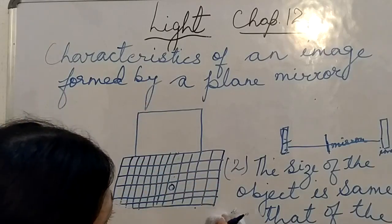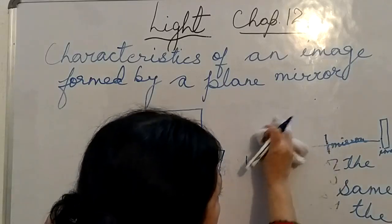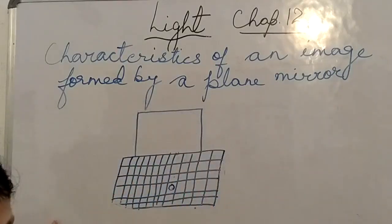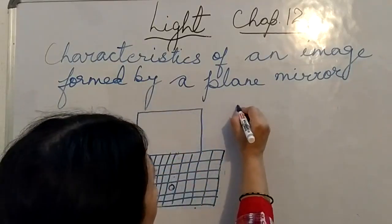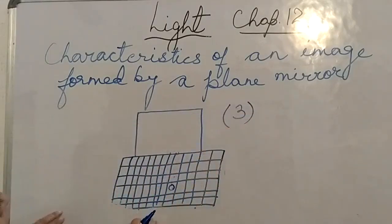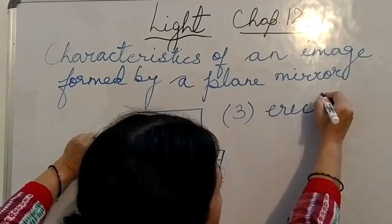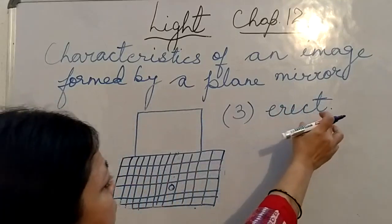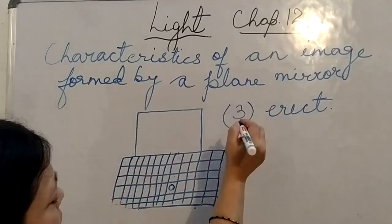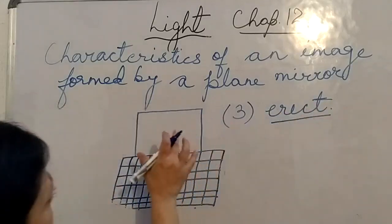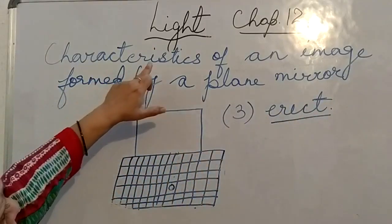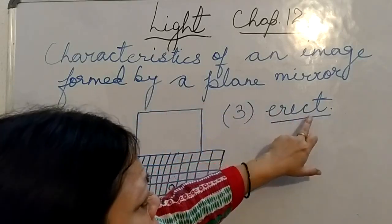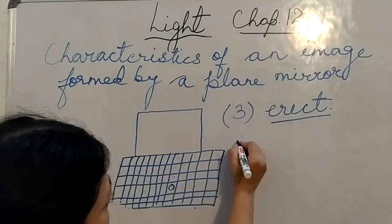The third characteristic feature is that the image formed is always erect — that is, it is not upside down. It is always upright. This is also a characteristic feature of the image formed by a plane mirror.